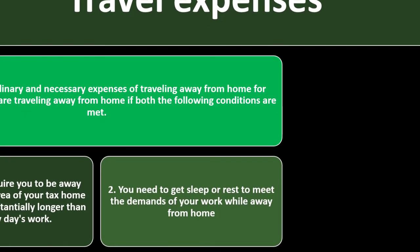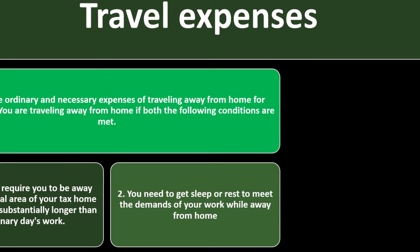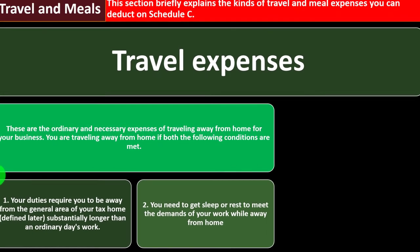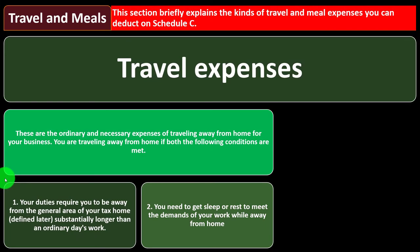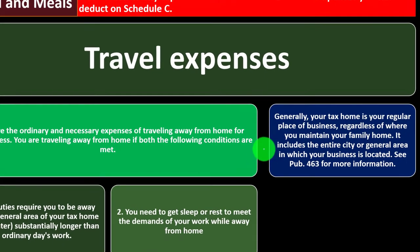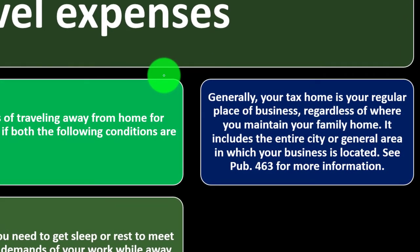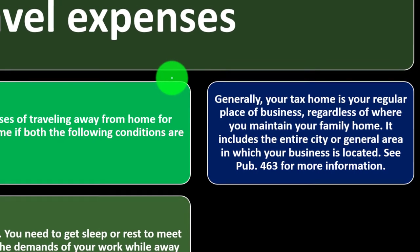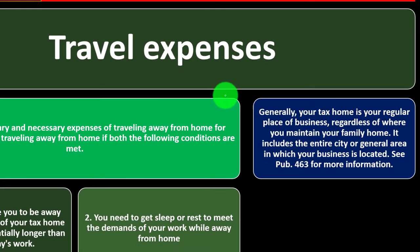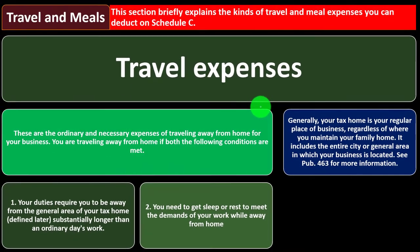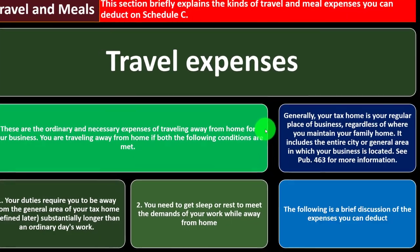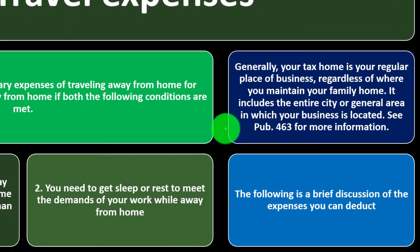Condition two: you need to sleep or rest to meet the demands of your work while away from home — typically meaning an overnight stay somewhere because of your work duties. Generally, your tax home is your regular place of business, regardless of where you maintain your family home. It includes the entire city or general area in which your business is located. See Publication 463 for more information.